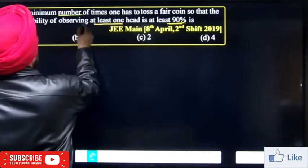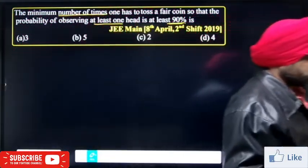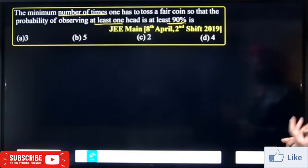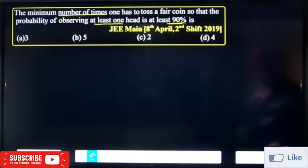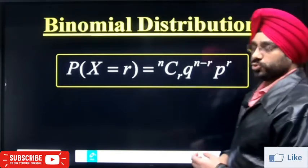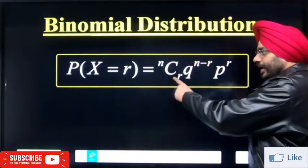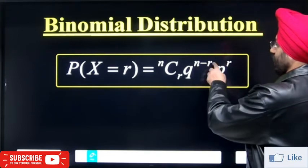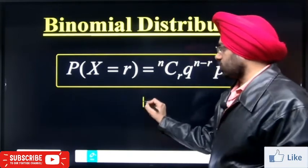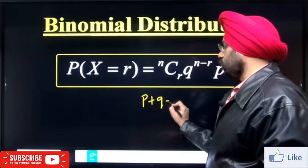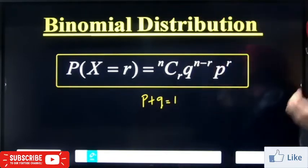Given the minimum number of times, how many times do you throw the coin? Use the binomial distribution. The binomial distribution probability of x equal to r is: nCr times p raised to power r, times q raised to power n minus r, where p plus q is equal to 1. P is the probability of success, q is the probability of failure.